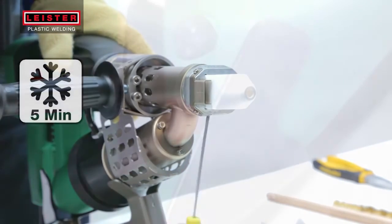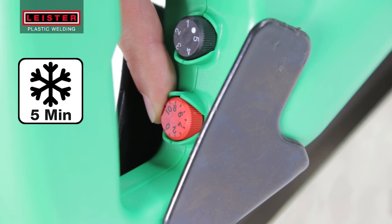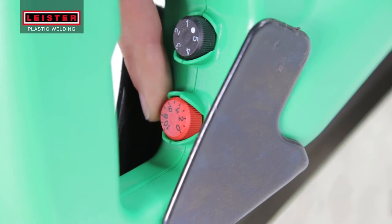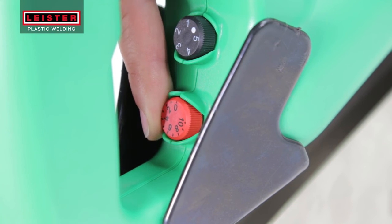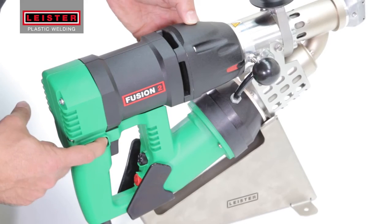Now, before switching the tool off, turn the red temperature potentiometer to the zero position and let the blower run for at least 5 minutes to allow the welder to cool down.